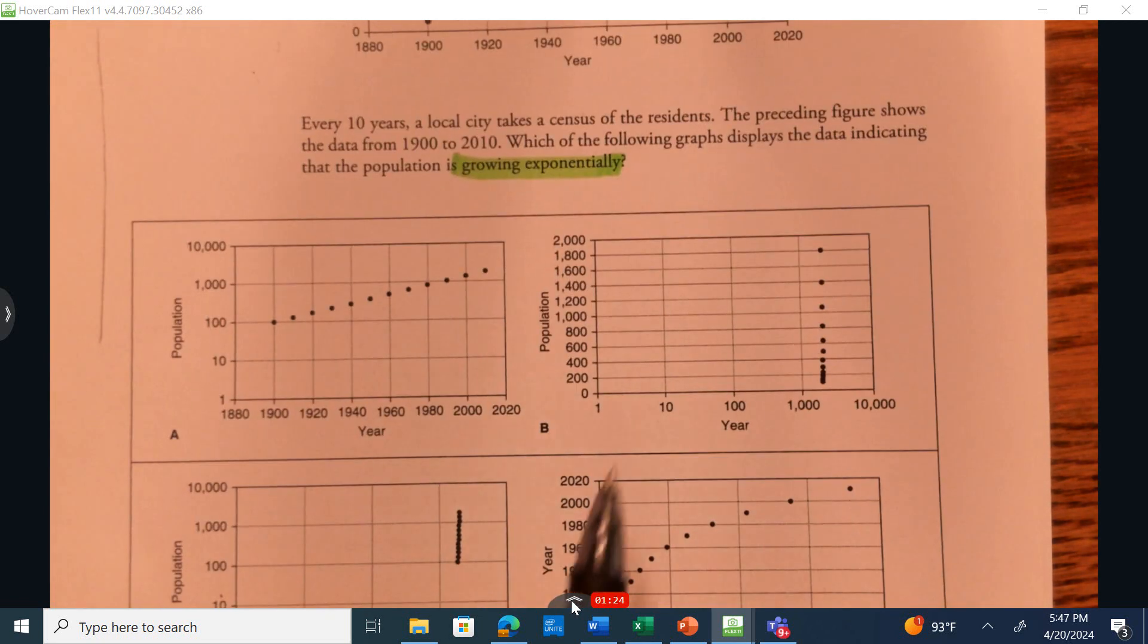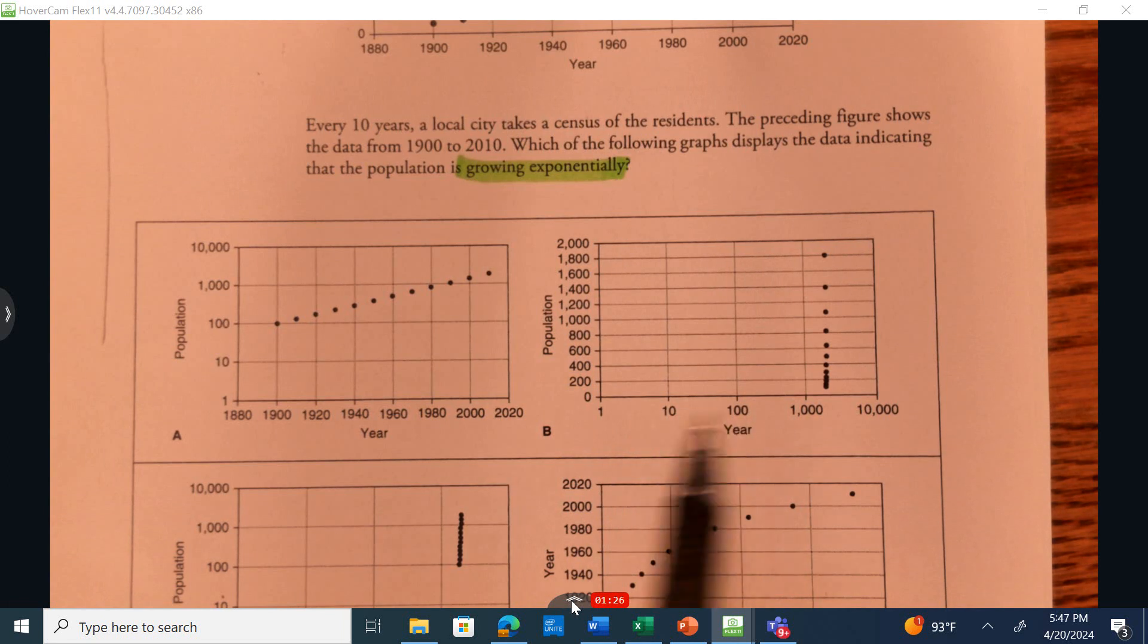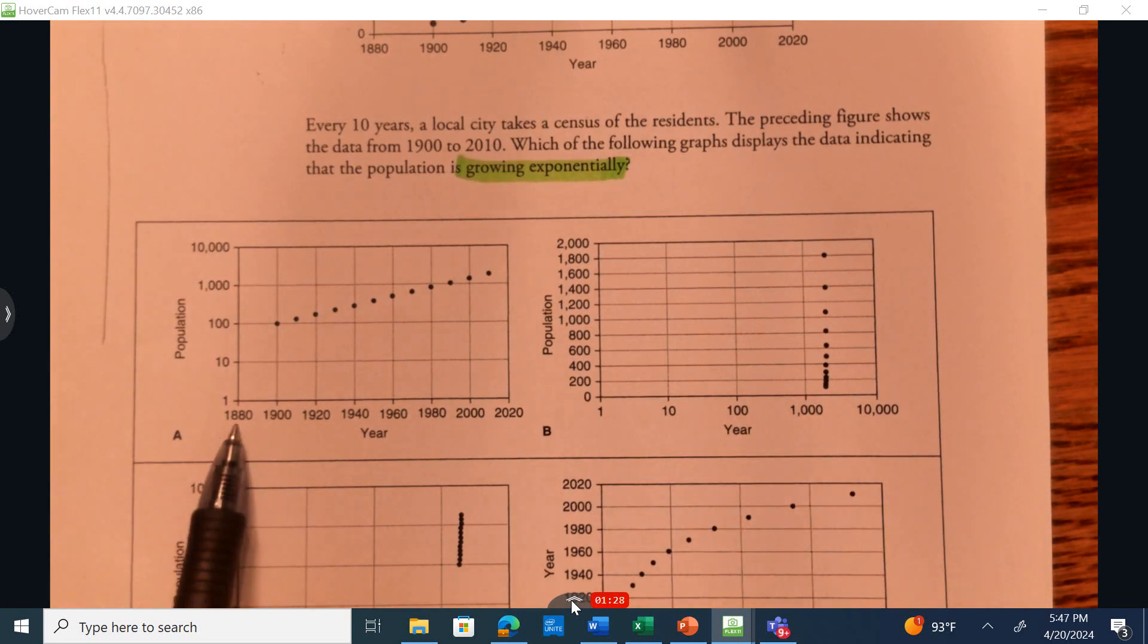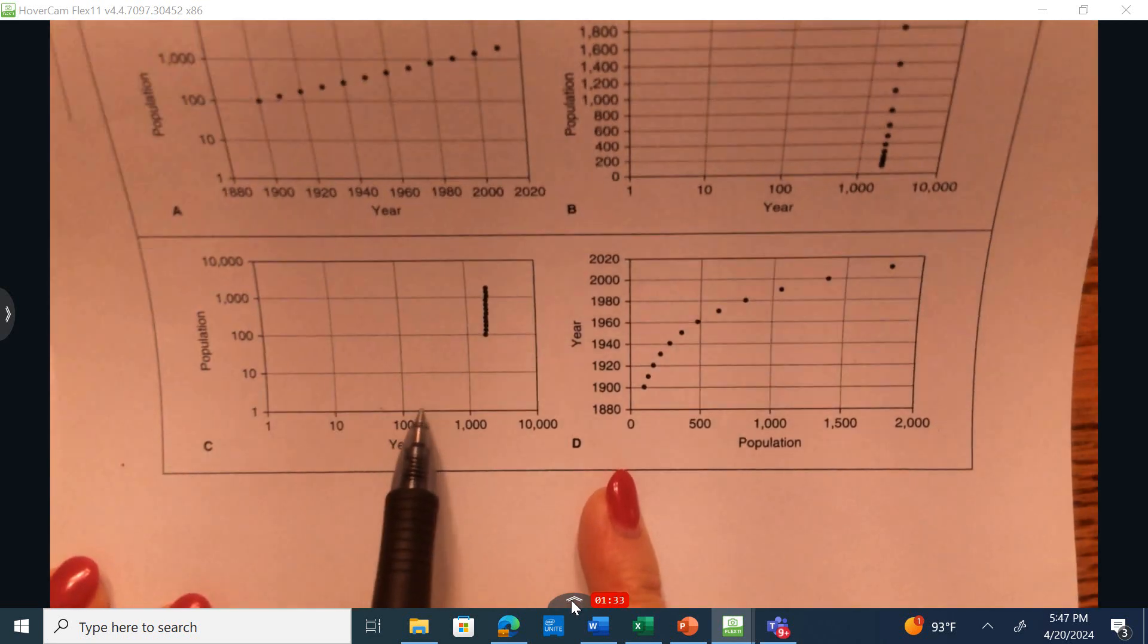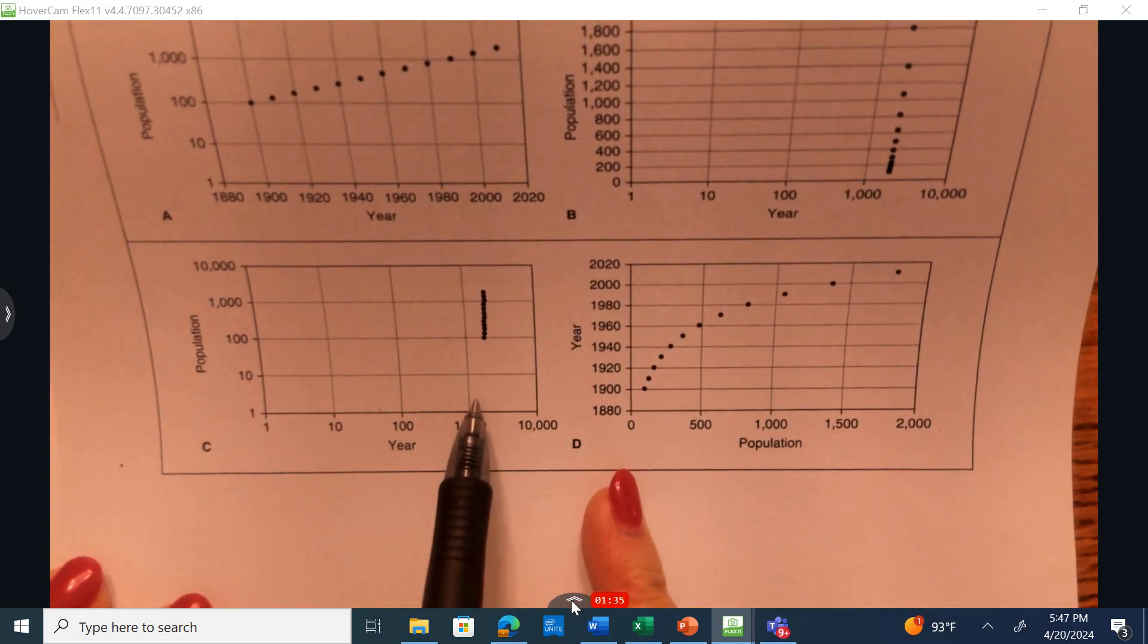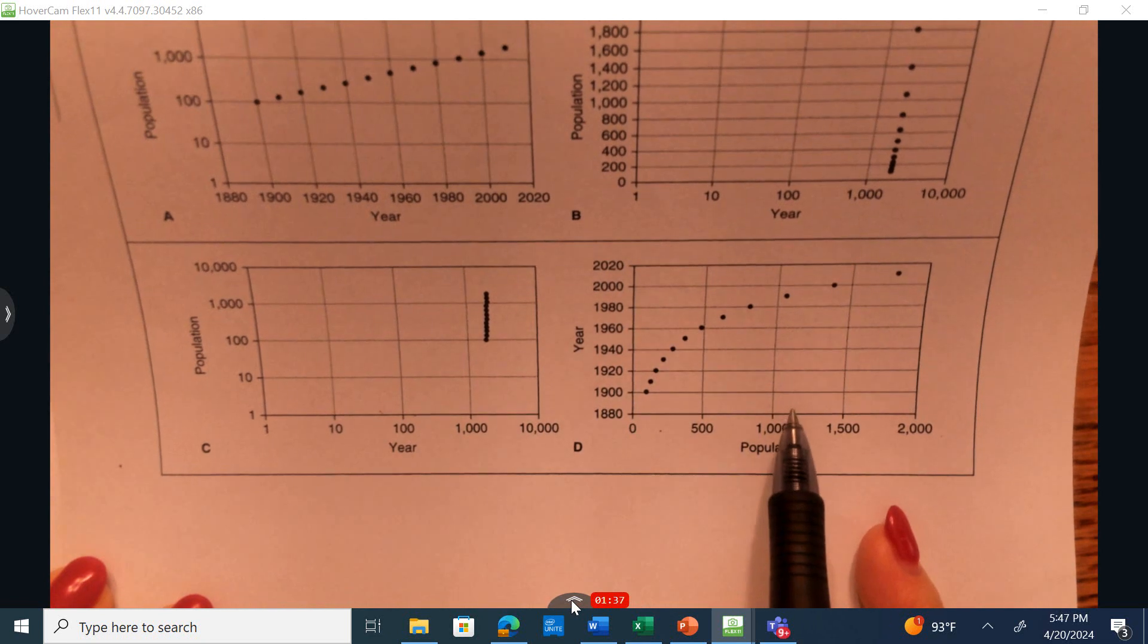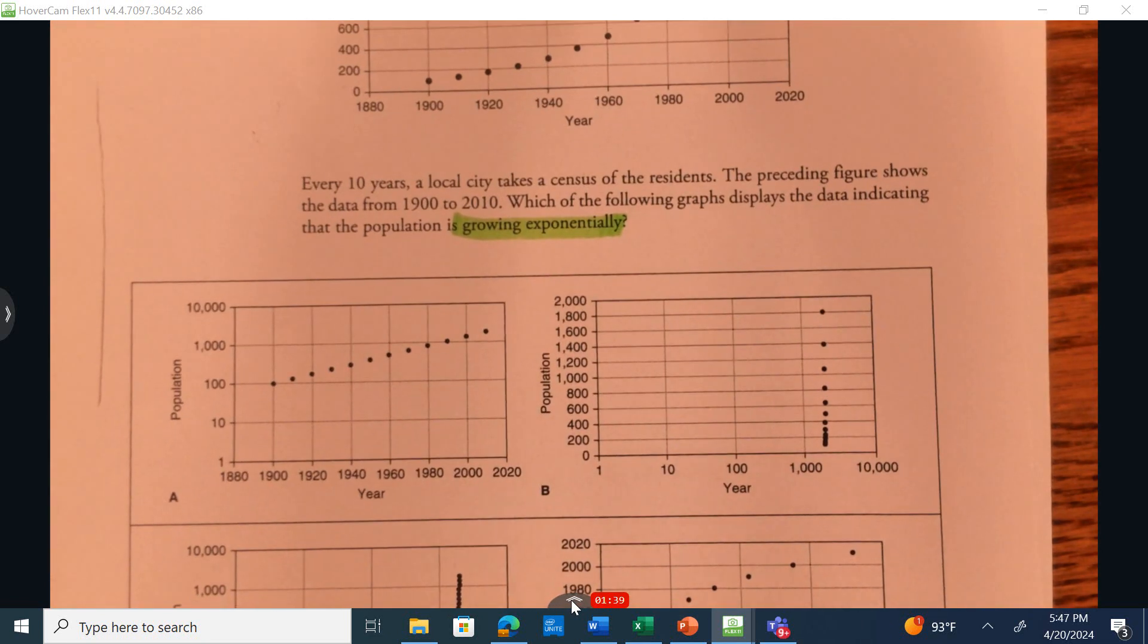When I look down below, I don't see the years, and this is not going up by 10. Here, I see the years, and it's consistently going up by 10. Down here, it's not consistently going up by 10, like a census is giving. Here, it's not consistently going up by 10. That alone tells me the correct answer is A.